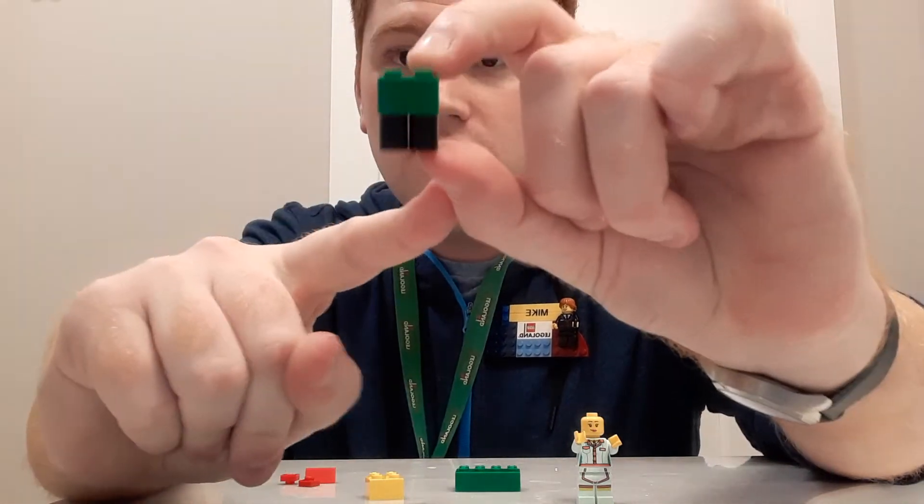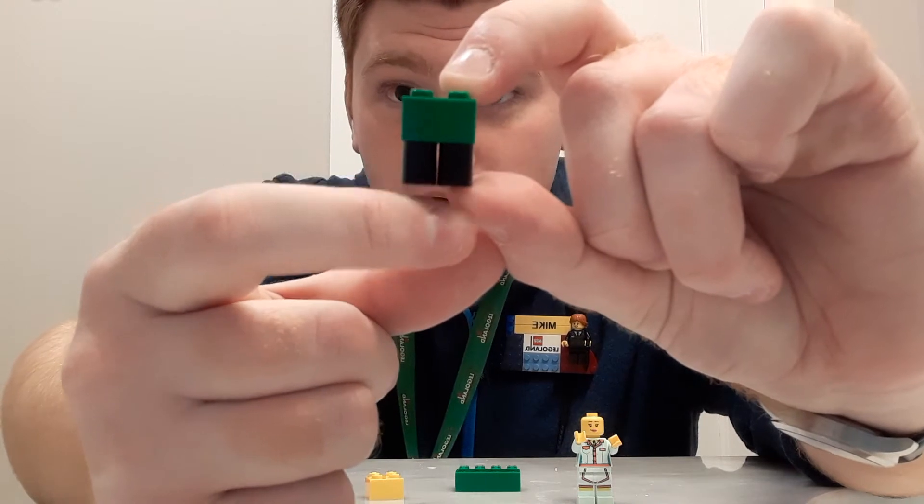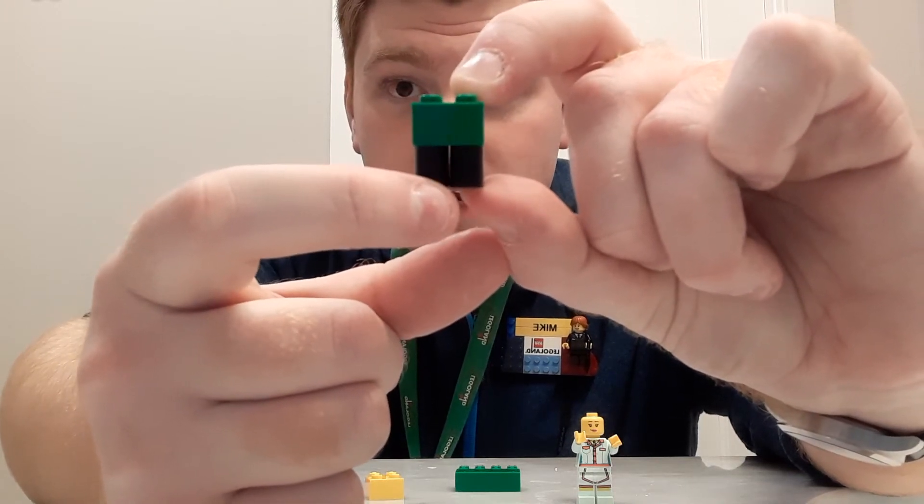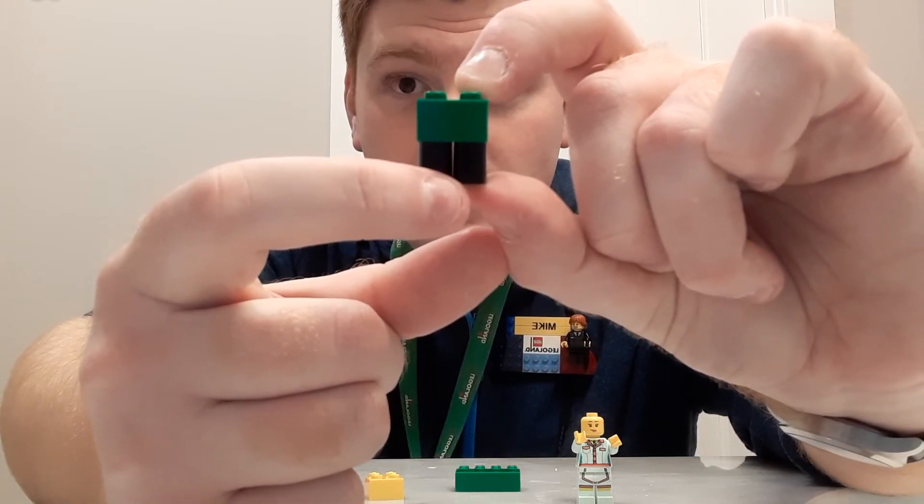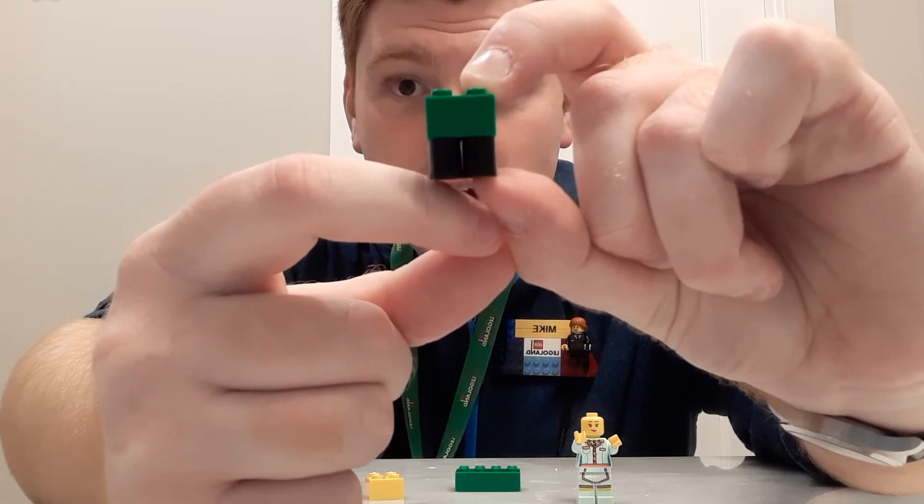We're going to put that right on top. Stack that right on top, just like that. Now, you see that little gap, that little space, right in between our 1x2s right there, right in between the blacks. Those are his little legs.